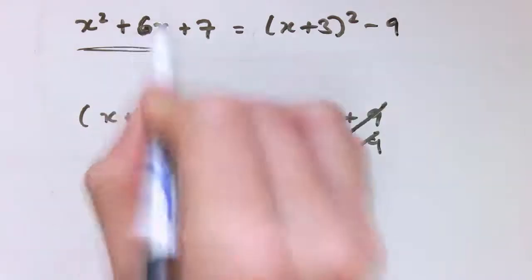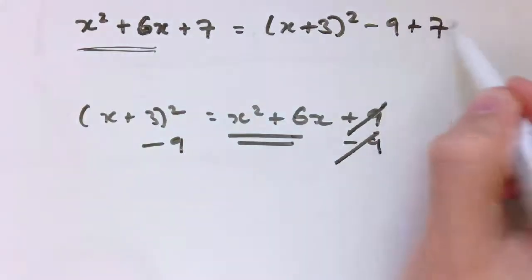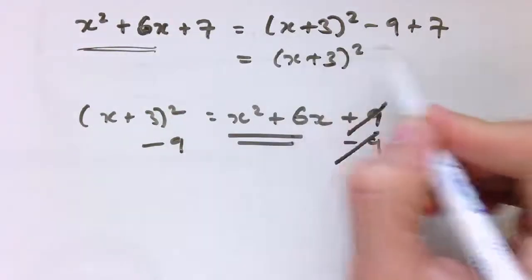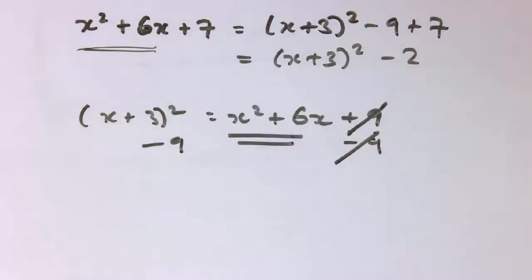So I haven't got quite what I want here, but if I subtracted the 9 on both sides, then I would just be left with my x² + 6x. So if I subtract 9, that gives me these terms, and then I add 7, because I've still got plus 7 here, so I get x + 3 squared minus 2, and that's the completed square form.